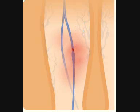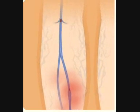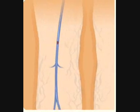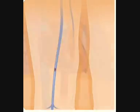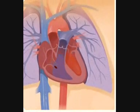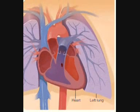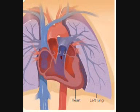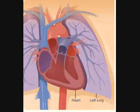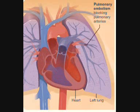Sometimes a clot in a deep vein can break off and travel through the bloodstream. The loose clot is known as an embolus. When the embolus travels to the lungs and forms a blockage in an artery supplying the lungs, it is known as a pulmonary embolism.